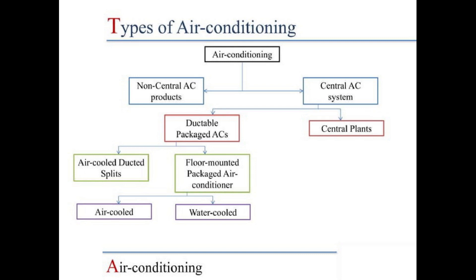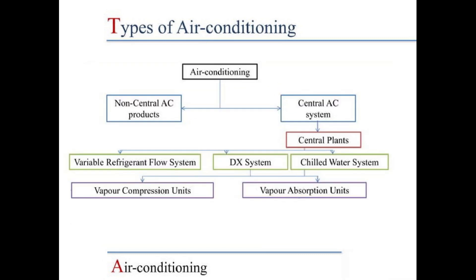Now let's look at central plants. Central plants are divided into three types: variable refrigerant flow system, DX system, and chilled water system. DX system is further divided into two types: vapor compression units and vapor absorption units.